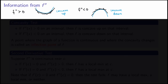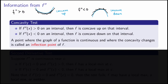So the second derivative says something about the concavity of the original function: where f double prime is positive, f is concave up; where f double prime is negative, f is concave down. An easy way to remember: if f double prime is positive we're happy, so we smile (concave up); if f double prime is negative we're unhappy, so we don't smile (concave down).